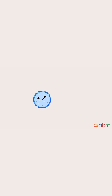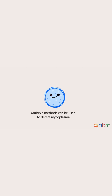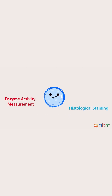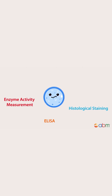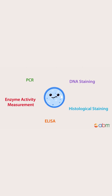Luckily, there are multiple methods that can be used to detect mycoplasma, which includes histological staining, enzyme activity measurements, ELISA, DNA staining, and PCR.